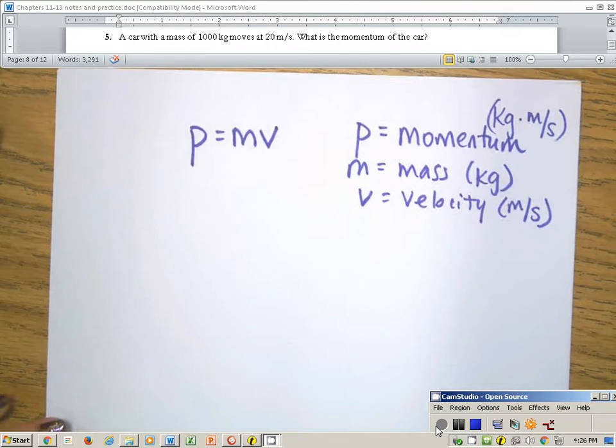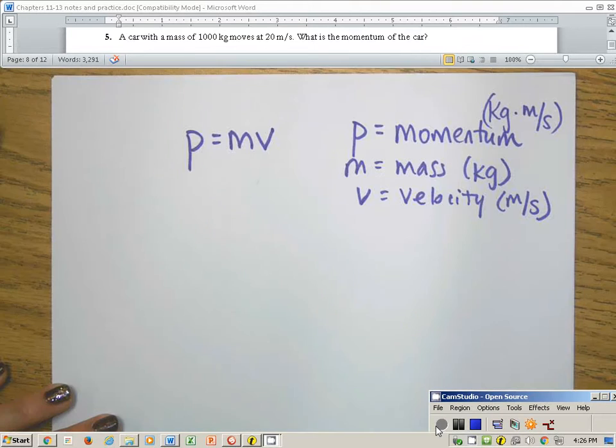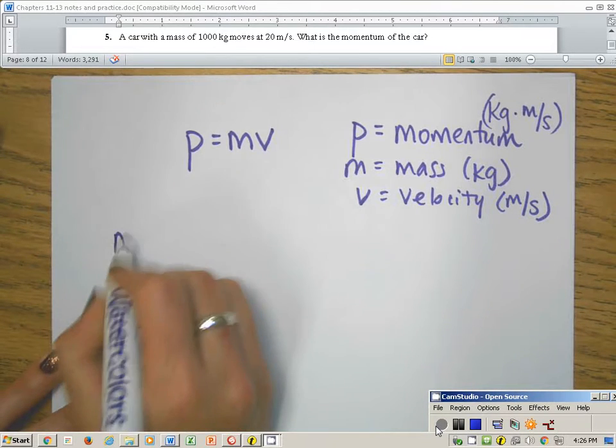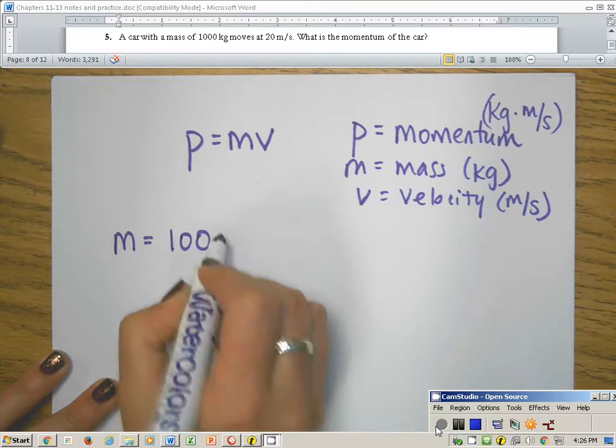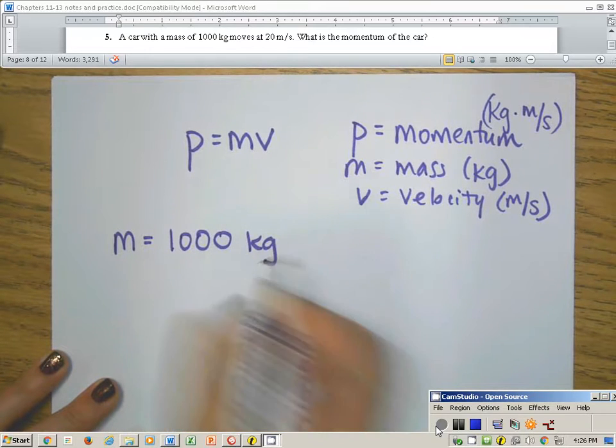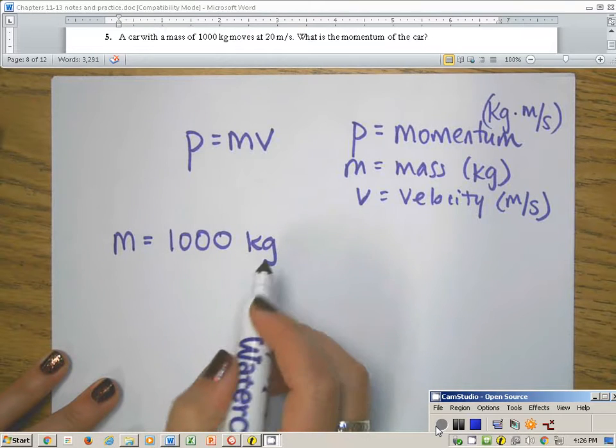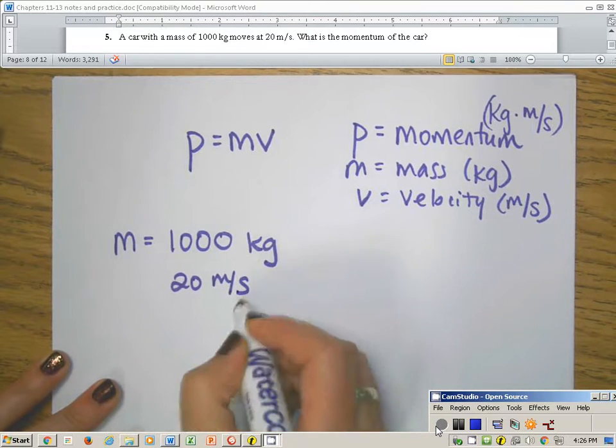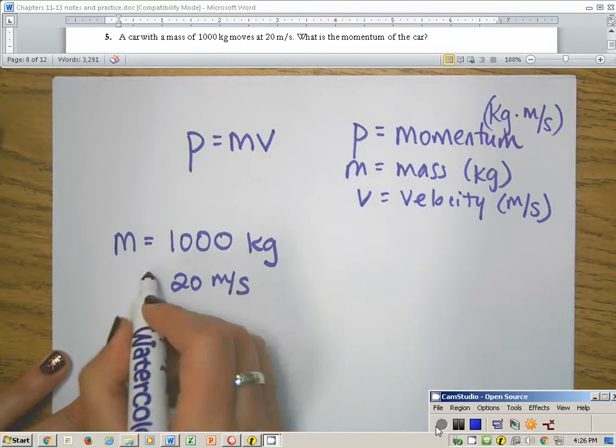So here's how we're going to use it. I have two examples. The first one says, a car with a mass of 1,000 kilograms. Well, as soon as I see the word mass, I know that I have an m, and then it says 1,000 kilograms. It moves at 20 meters per second. I'm writing down all my numbers with their units, and I'm deciding what they mean.